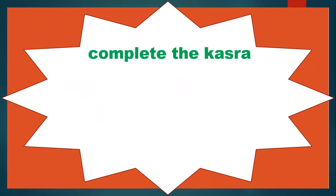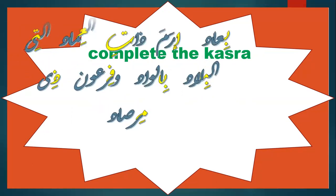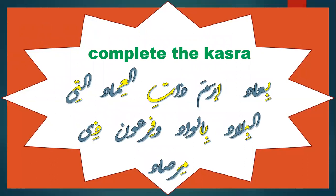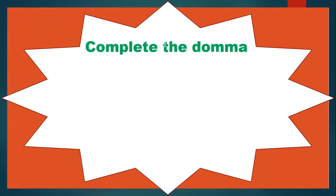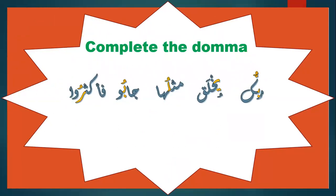Examples of Mad Arid li-Sukun: عَادٍ، عَذَابٍ، الْمِرْصَادِ، بِالْوَادِ، الْأَوْتَادِ — read with two, four, or six beats. Also, complete the kasra in words: بِعَادٍ — بِ not بَ، إِرَمَ — إِ not أَ، ذَاتِ — تِ not تَ، الْعِمَادِ — عِ not عَ، الَّتِي — تِ not تَ، بِالْوَادِ، فِرْعَوْنَ. Complete the damma: رَبُّكَ — بُ not بَ، يُخْلَقُ — قُ not قَ، مِثْلُهَا — لُ not لَ، جَابُوا، فَأَكْثَرُوا.